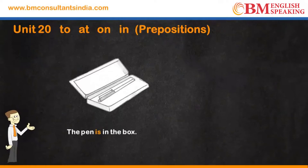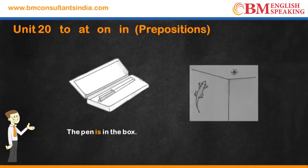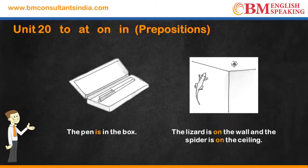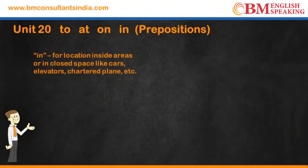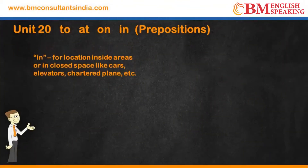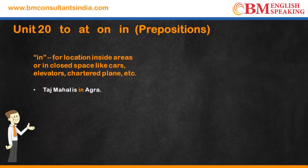The pen is in the box. The lizard is on the wall and the spider is on the ceiling. 'In' is used for location inside areas or closed spaces like cars, elevators, charter planes, etc. Bade mein chhoti cheez aayegi tab hum 'in' ka upyog karenge. Taj Mahal is in Agra — Agra bada hai, Taj Mahal uske andar hai.